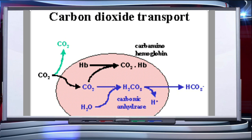RBCs contain a very high concentration of the enzyme carbonic anhydrase, and minute quantities of the same are present in the plasma. At the tissue site where partial pressure of carbon dioxide is high due to catabolism, carbon dioxide diffuses into blood and forms bicarbonate ions and hydrogen ions. At the alveoli site where partial pressure of carbon dioxide is low, the reaction proceeds in the opposite direction, leading to the formation of carbon dioxide and water. Thus carbon dioxide trapped as bicarbonate at the tissue level and transported to the alveoli is released out as carbon dioxide.